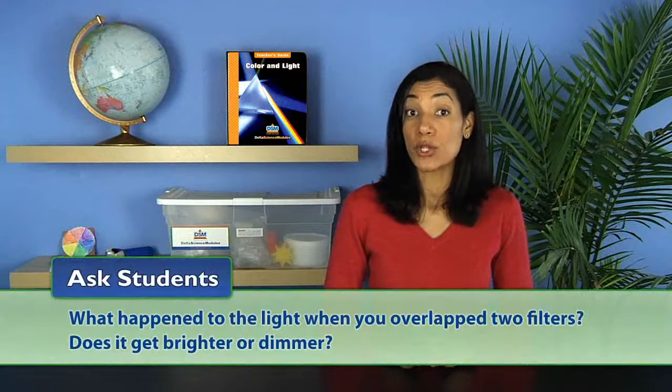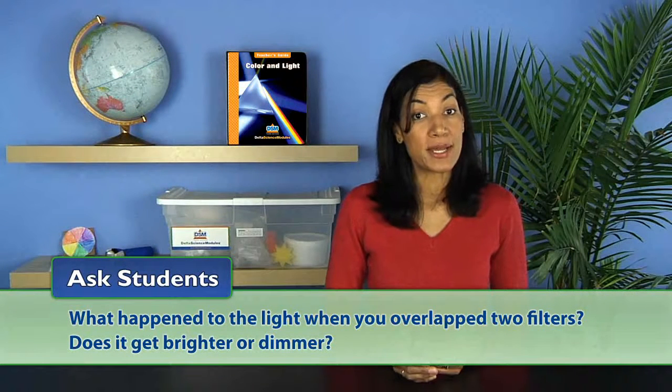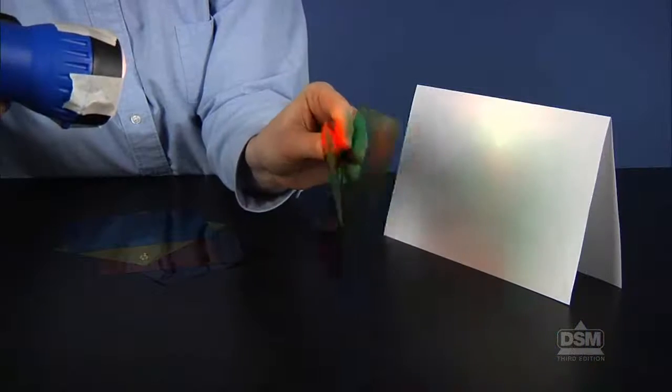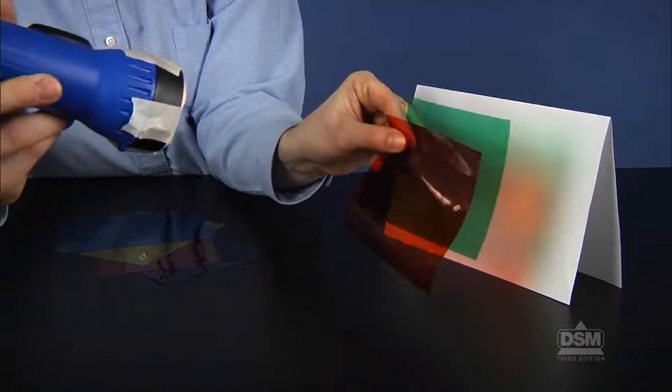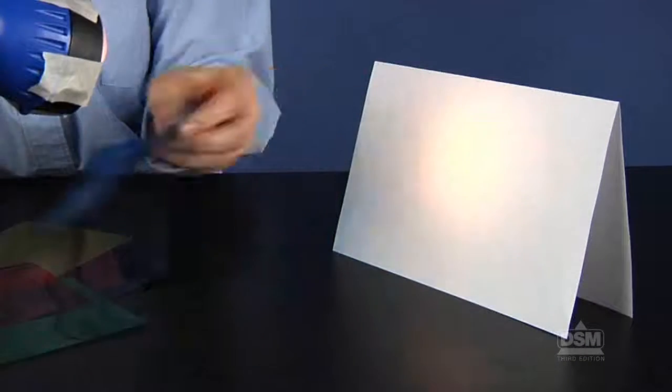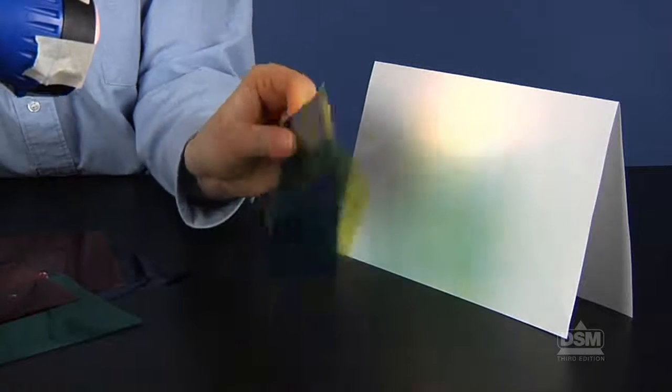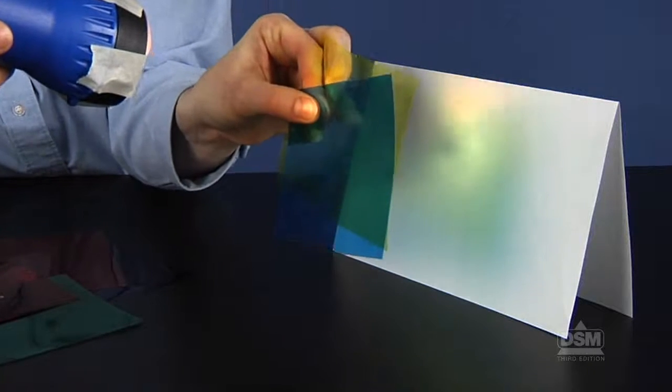When they are finished, ask students what happened to the light when you overlapped two filters. Does it get brighter or dimmer? They should now observe that the light changes color because each added filter absorbs additional colors of light. The intensity of the light decreases because each color removed diminishes the total amount of light that gets through the filters and hits the paper screen.